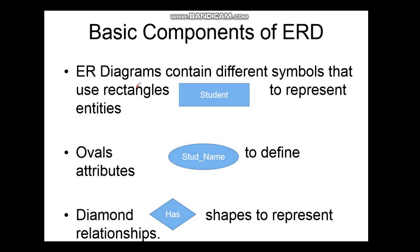Basic components of ERD: ER Diagrams contain different symbols. Rectangles are used to represent entities — as shown here, the rectangle represents the entity set. Ovals are used to define attributes; for example, taking the entity set as 'student', the attribute 'student name' is represented with ovals. Diamonds represent relationships — 'has' written here is the relationship, represented with the diamond shape.